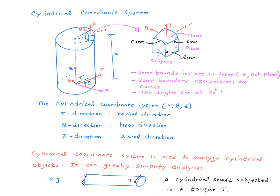As you probably already guessed, cylindrical coordinate system is used to analyze cylindrical objects. The analysis of a cylindrical object can be very complicated when you use a Cartesian coordinate system, whereas it can be very simple if you use a cylindrical coordinate system. As an example, if you have a cylindrical shaft subjected to a torque T, like shown in this picture, cylindrical coordinate system is the way to go. Analysis is going to be very simple.